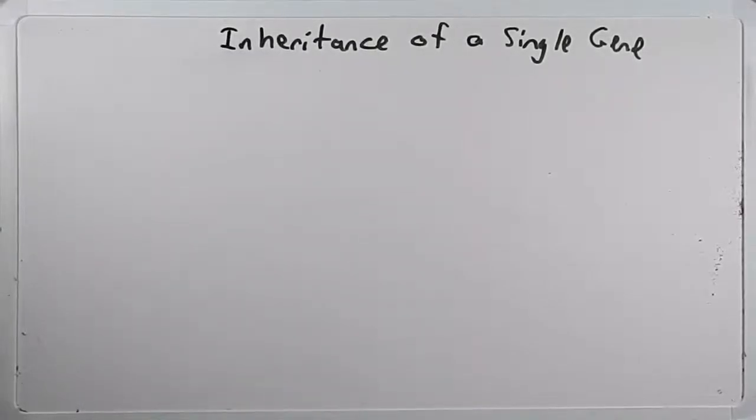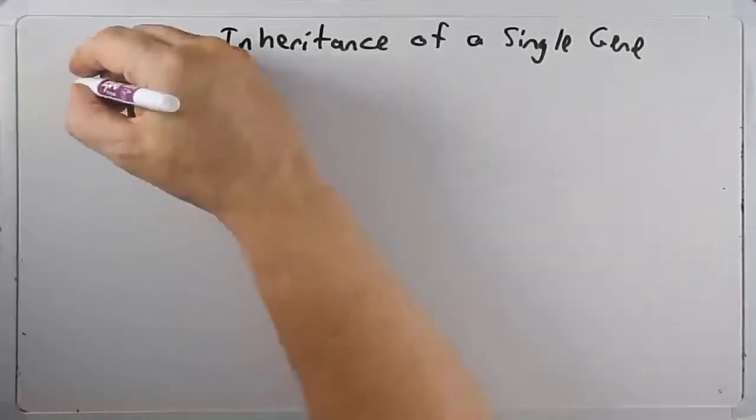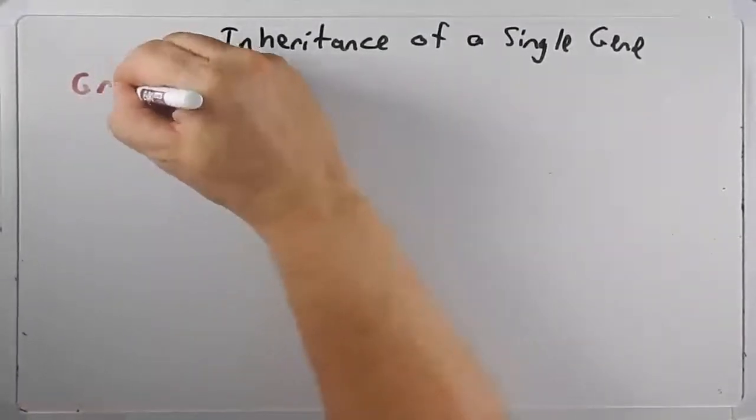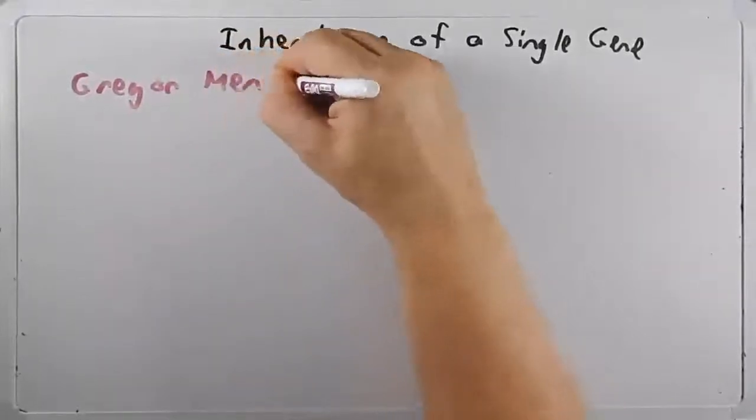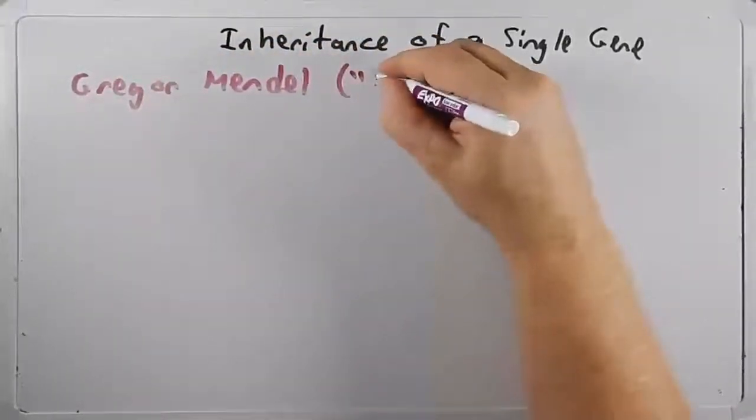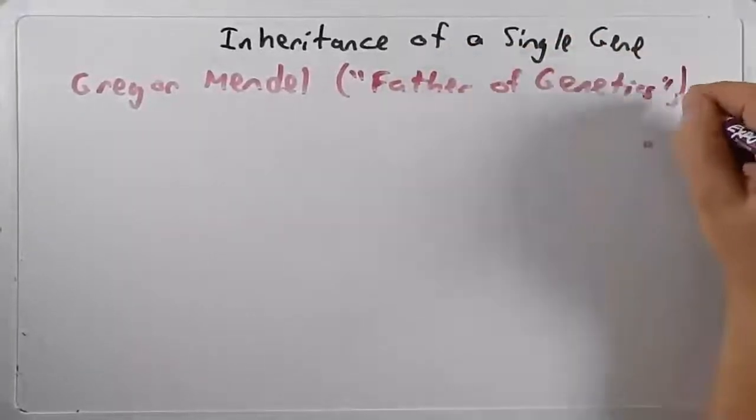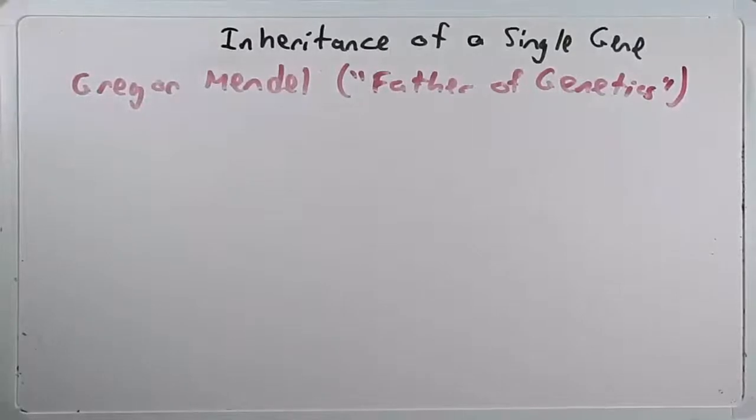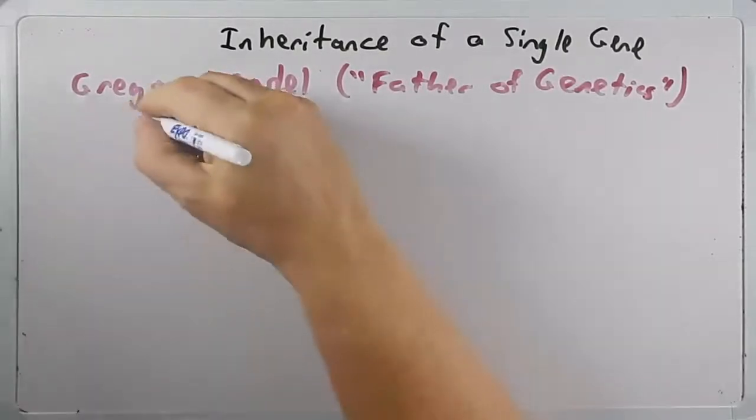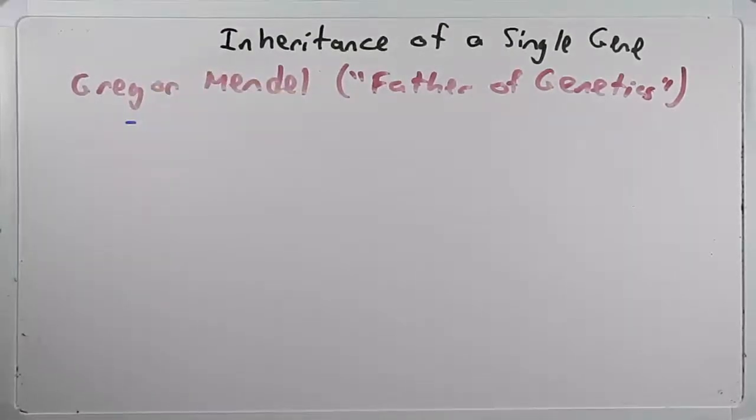Now those four points I just made were all possible because of this Austrian monk named Gregor Mendel, who is known as the father of genetics. Now, as I said before, he wasn't the first person to ever do genetic experiments, but he was the first one to apply rules to him so that we could make predictions.